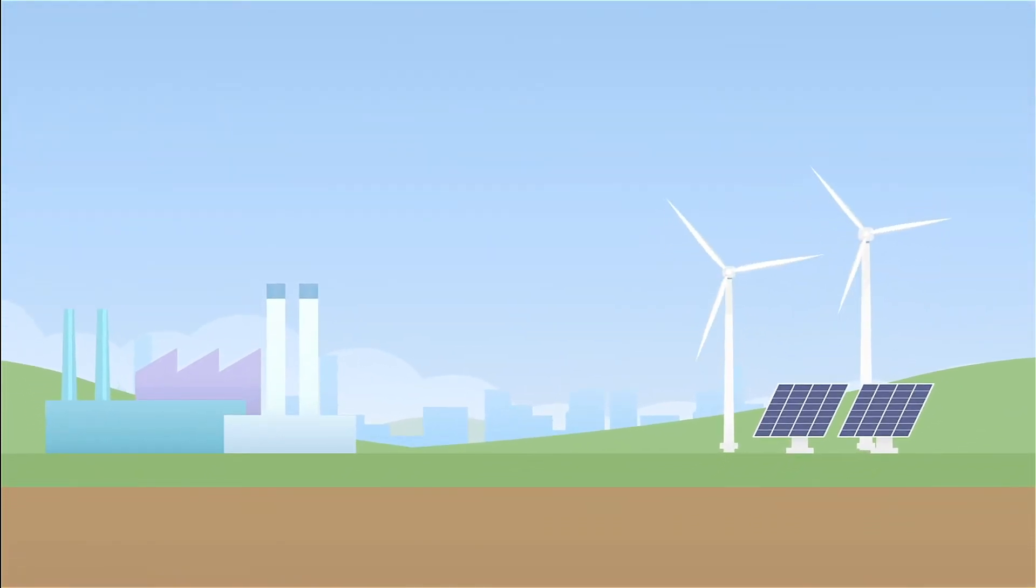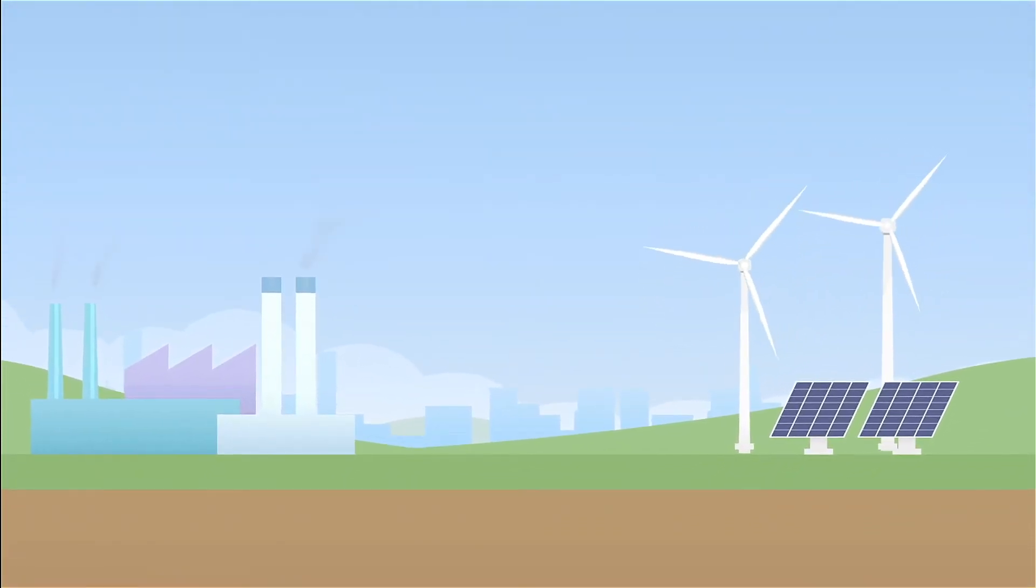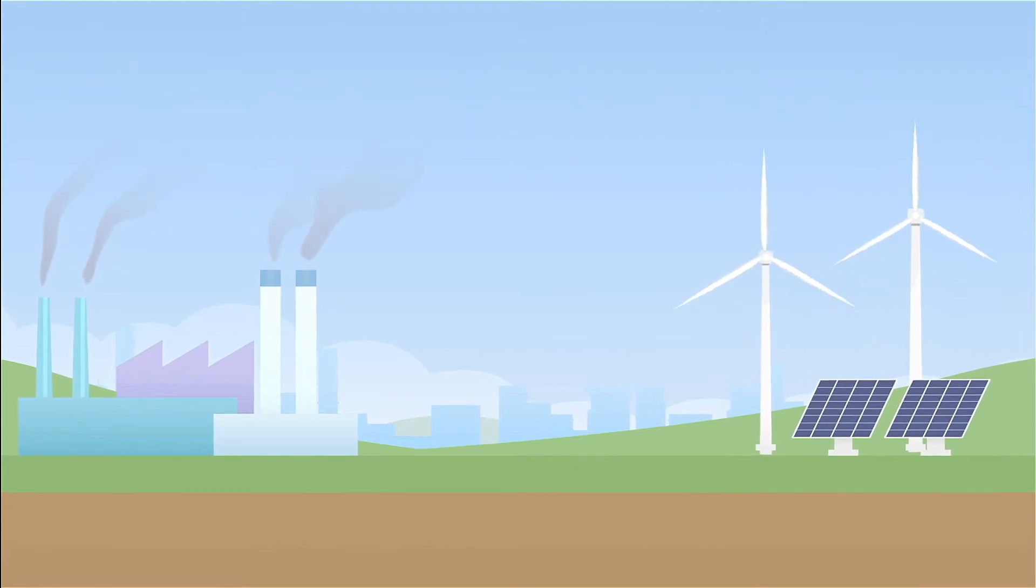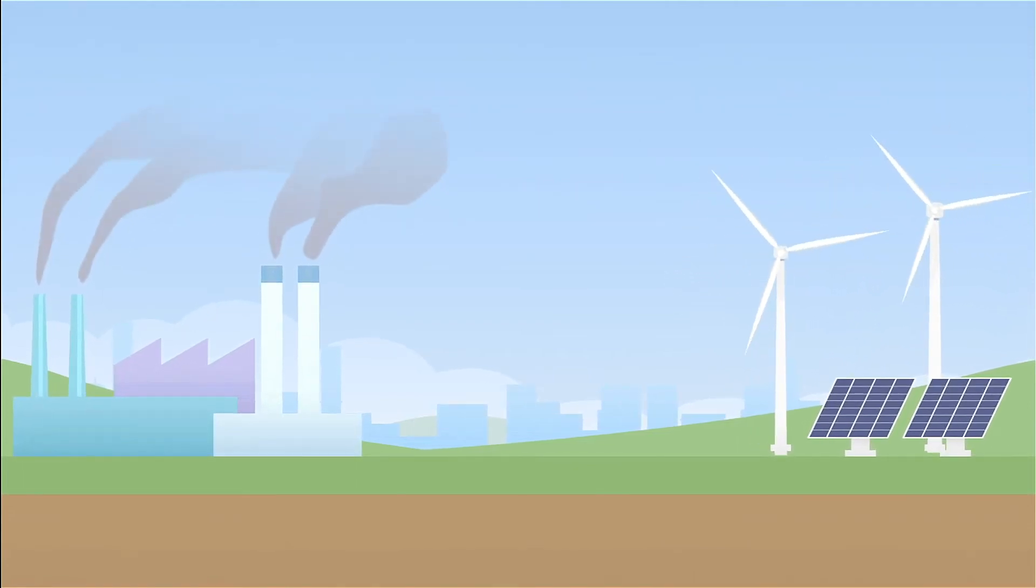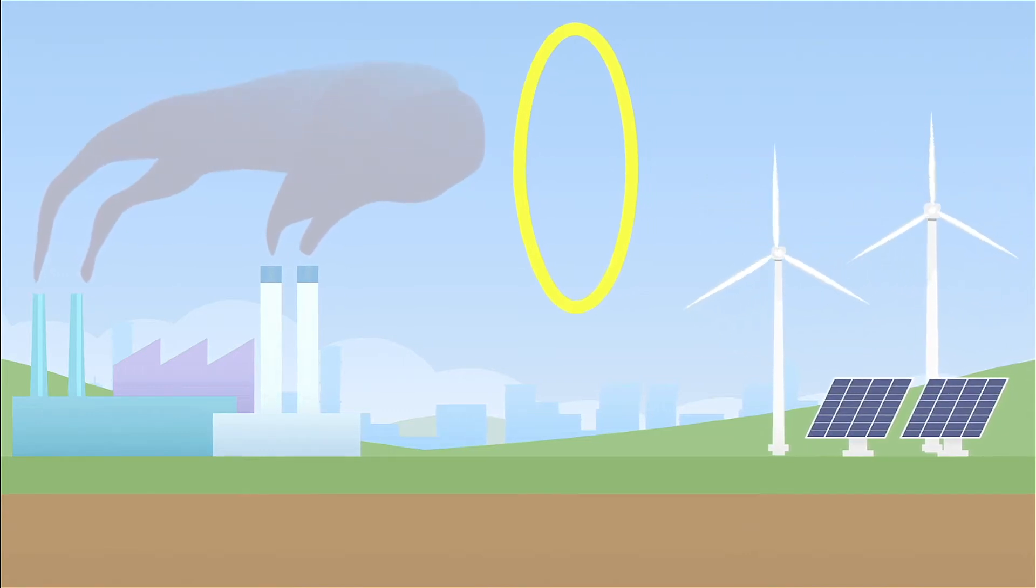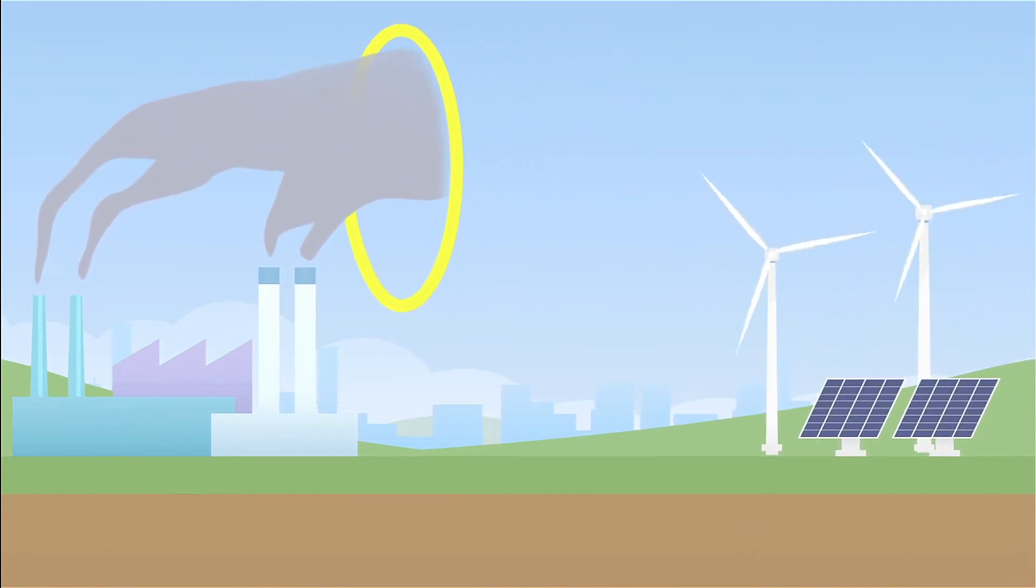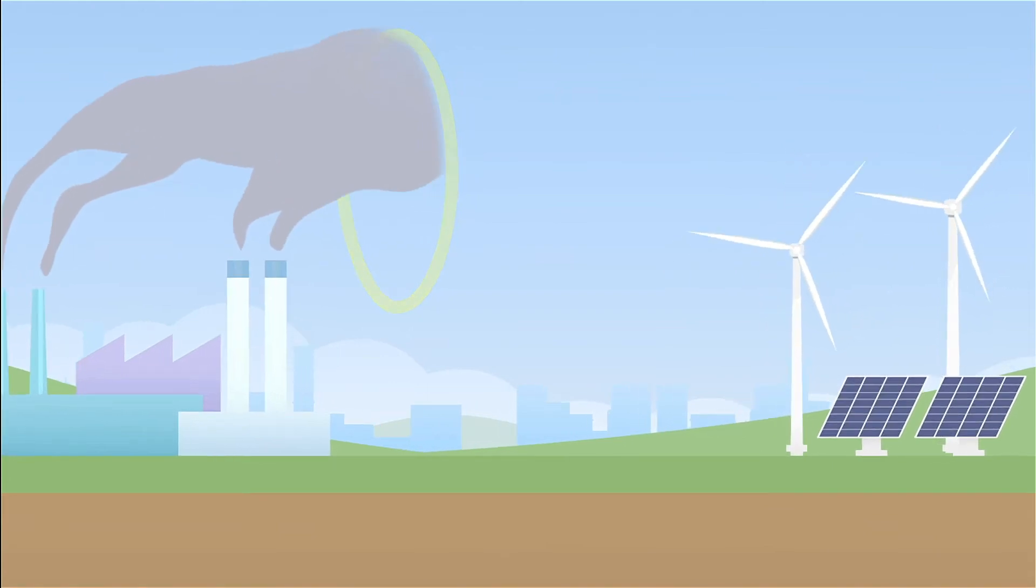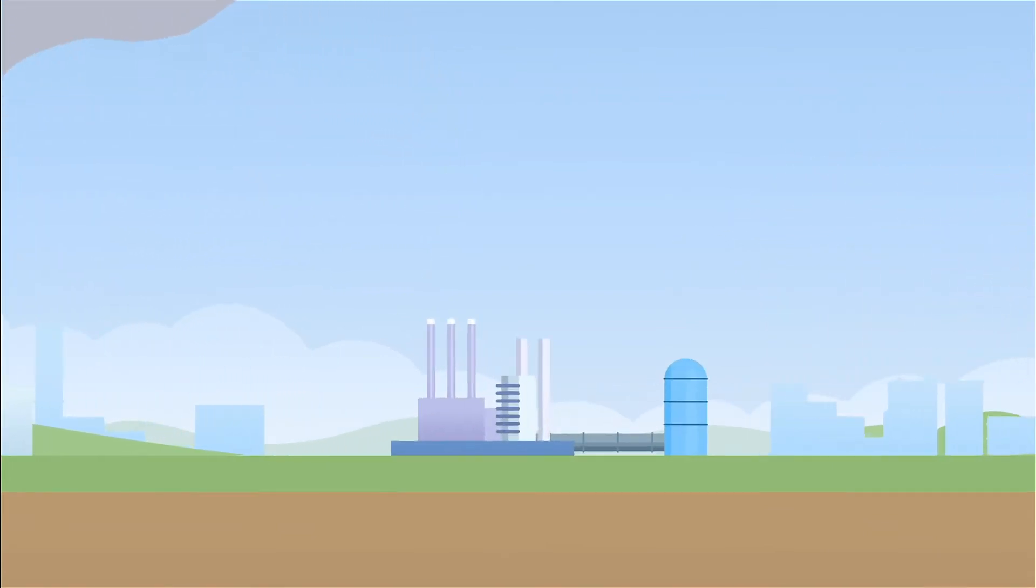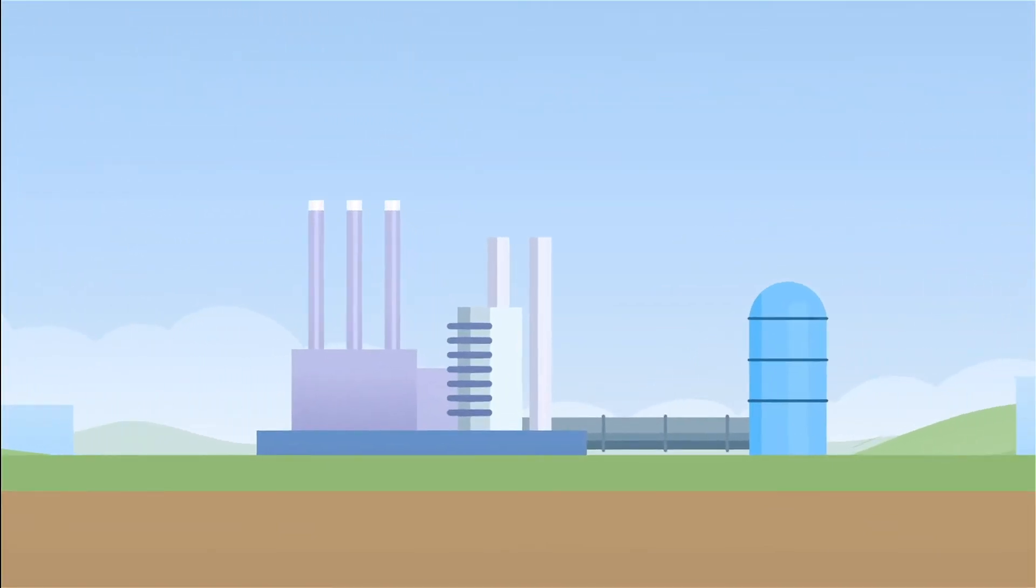As the world is trying to reduce CO2 emissions, replacing fossil fuels with renewable energy is more important than ever. But to meet the goals of the Paris Agreement, we need to take extra measures by capturing CO2 through a process called CCUS – Carbon Capture Utilisation and Storage.